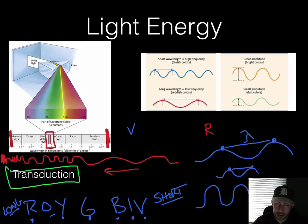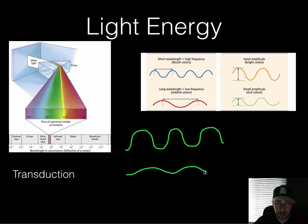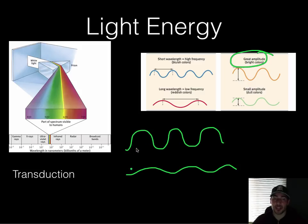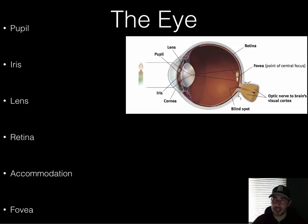Another part of a wave is how tall it is — that's the amplitude. The taller the wave, the higher the amplitude, and the brighter the color is going to be. The lower the amplitude, the duller the color. So the wavelength tells you where on the spectrum a color falls — whether it's blue, red, or somewhere in between — and the amplitude tells you how bright that color is.